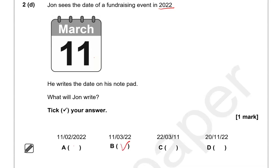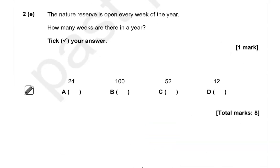C is 22nd of the 3rd. So that's not correct. And the year is 2011. The last option got 20th of November, 2022. So that's not correct either. So option B is the only correct one. The nature reserve is open every week of the year. How many weeks are there in a year? Tick your answer. So in a year there are 52 weeks. That's something to always remember.